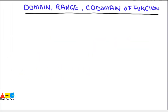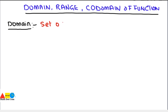Today we will see how you can identify what is the domain, range and co-domain of a function. Before going towards the example, let's have the short definitions of domain, range and co-domain. Domain is defined as the set of all first components of ordered pairs in a function.